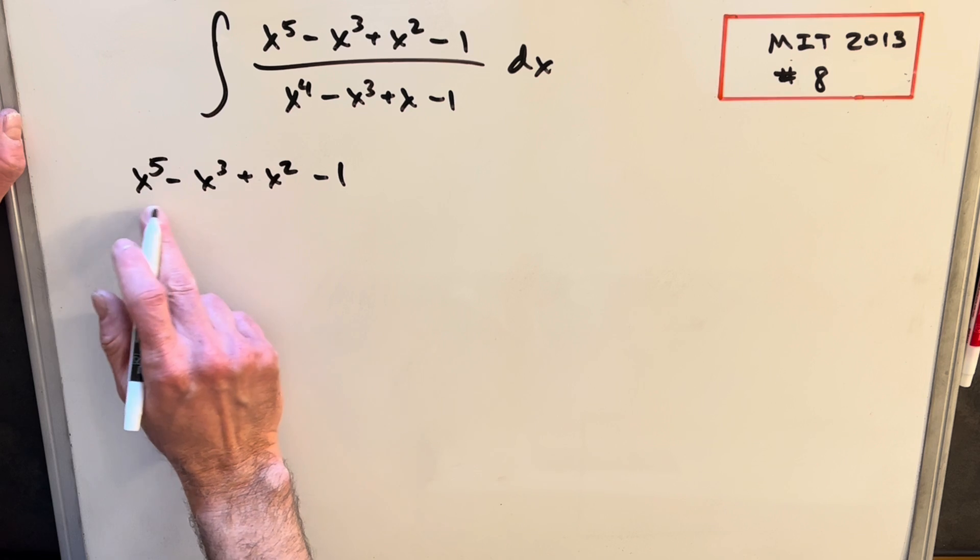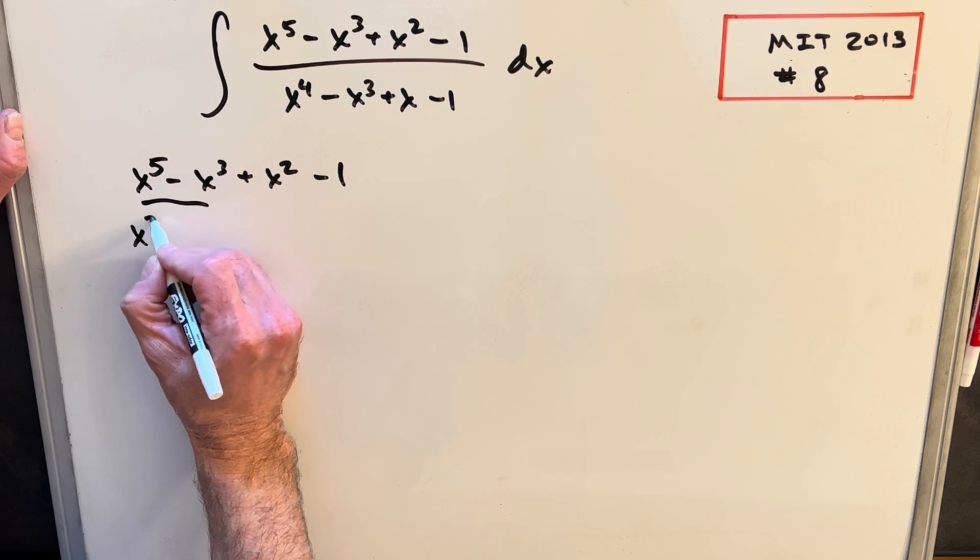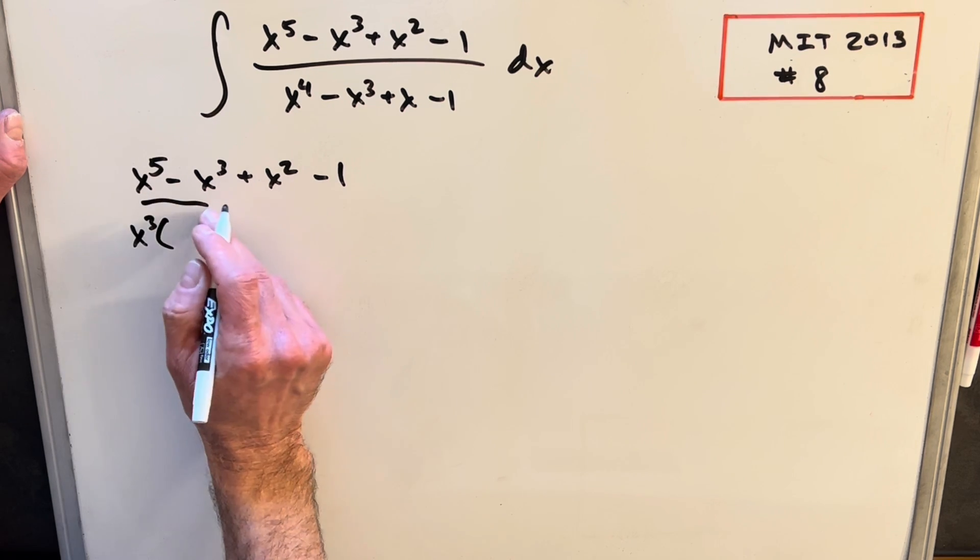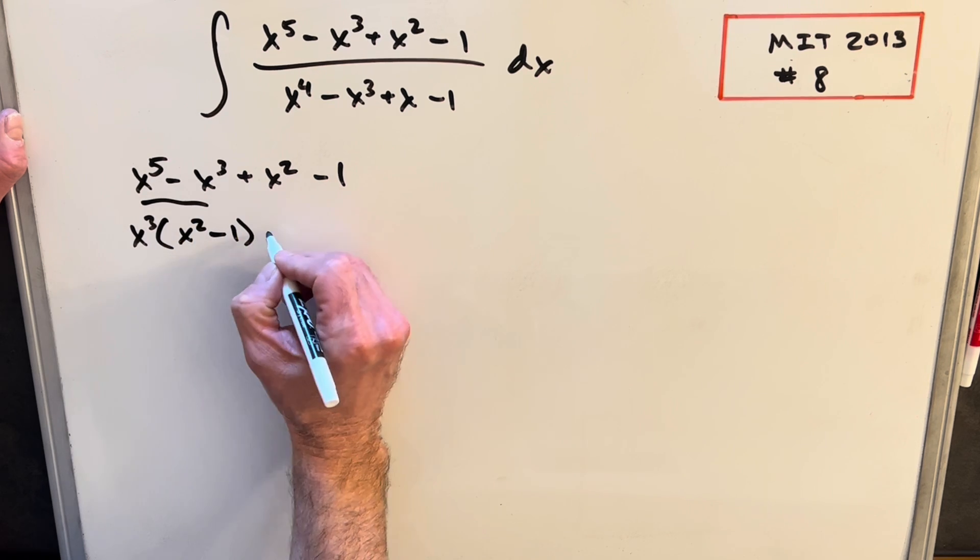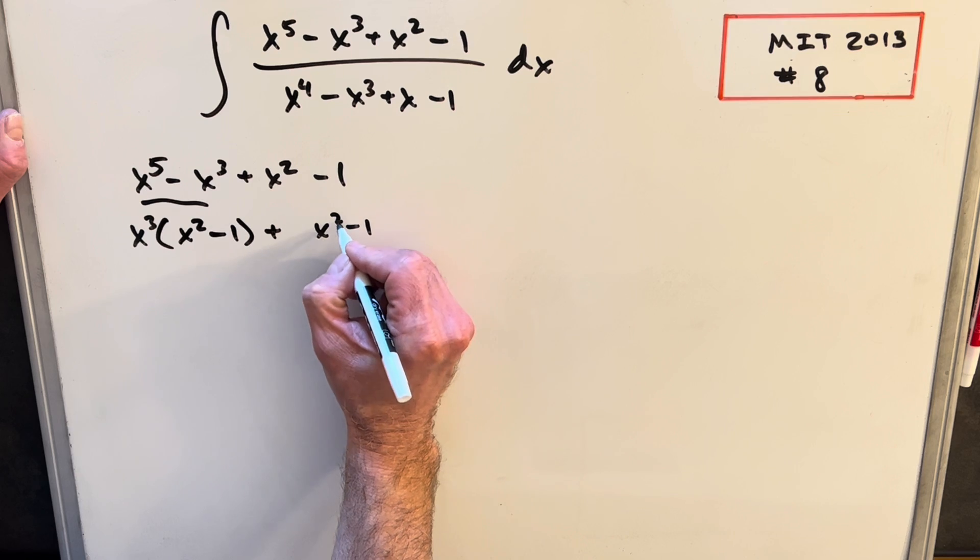From here, I think what I'm going to do, from this first term, I can factor out an x^3. Because we have an x^3 in common, we'll have x^3 times (x^2 - 1) plus (x^2 - 1).